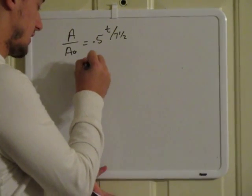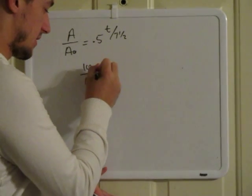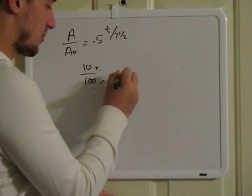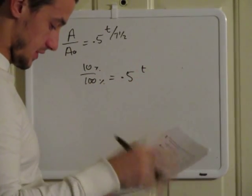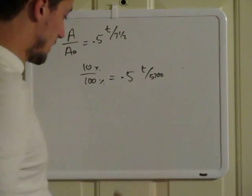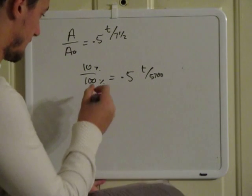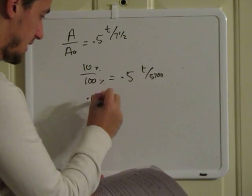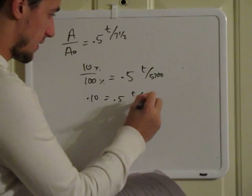So what you have is 10 divided by 100, which is 10% divided by 100%, equals 0.5 to the T over 5,700. So this is going to be 0.10 equals 0.5 to the T over 5,700.